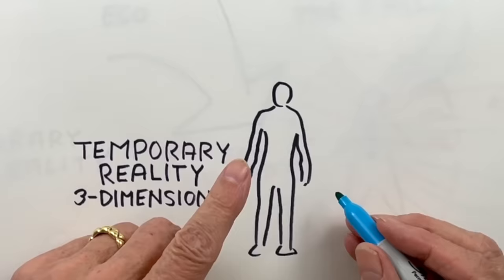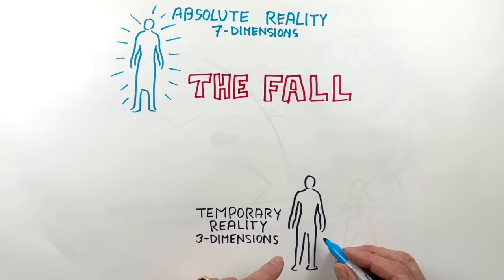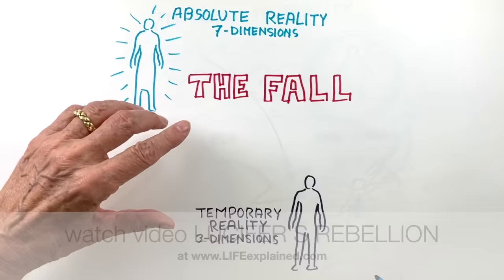Our soul is invisible to us and we can only see its shell, our physical body, which is matter. As we have seen in many of my videos, the human being with its physical body came into being through the Fall, the separation from the absolute seven-dimensional reality.